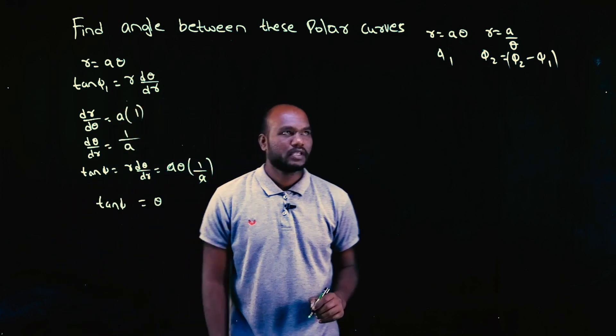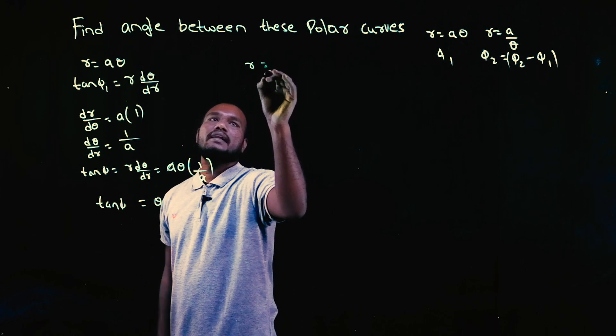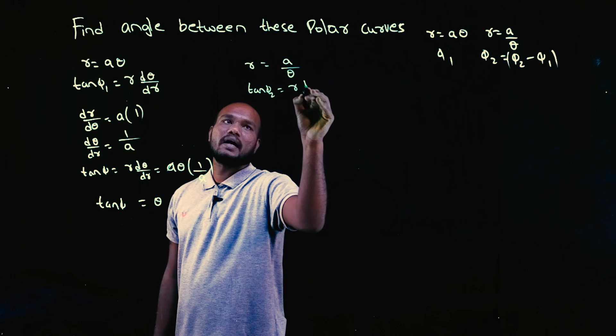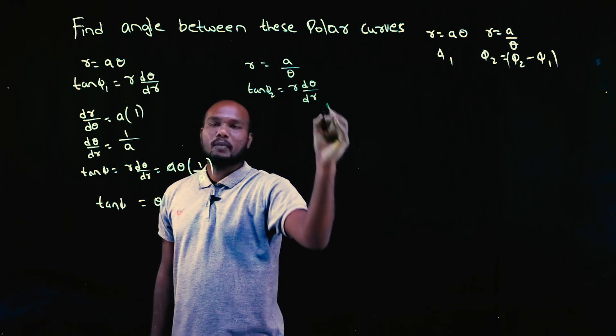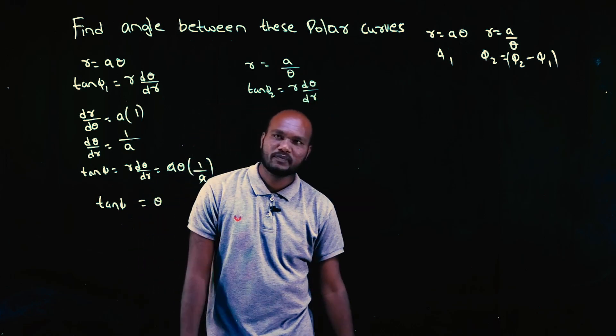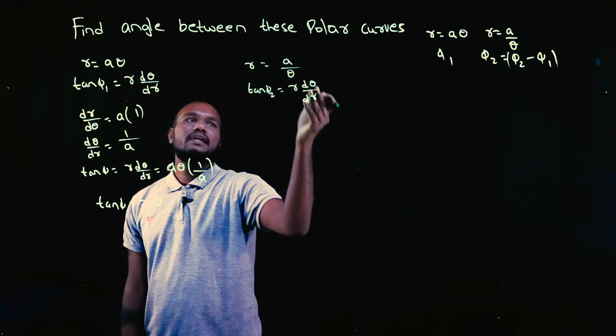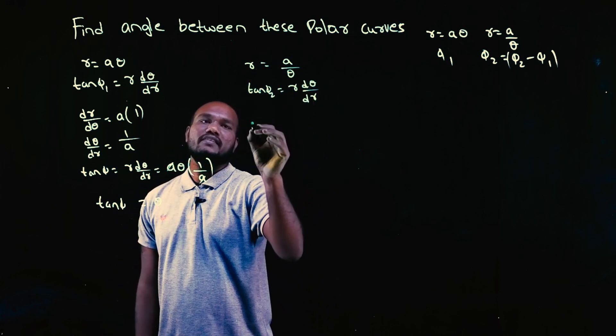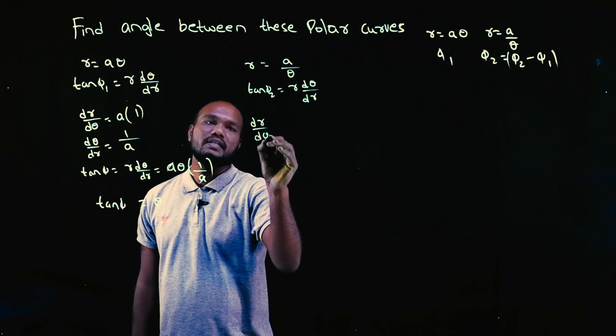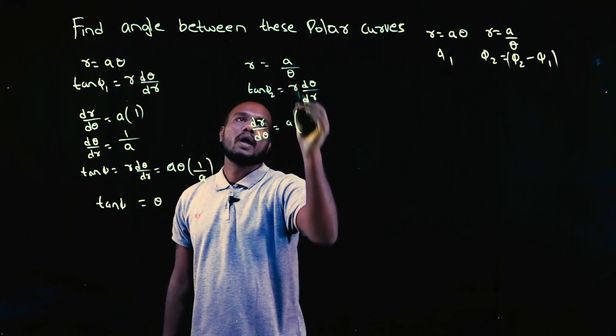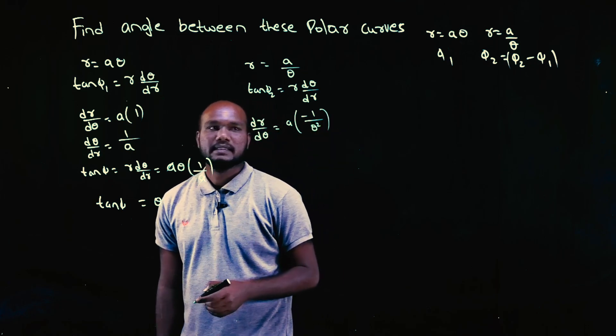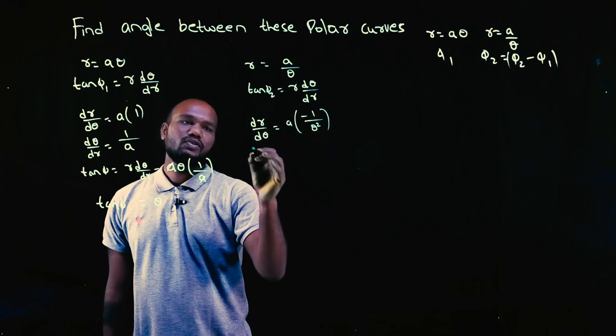Let's go for φ₂, that is r = a/θ. So again, tan φ₂ is what? r·dθ/dr. R is directly given, dθ/dr we can directly differentiate, no need of log. So r differentiation is what? dr/dθ = a, which is a constant, 1/θ differentiation is -1/θ².